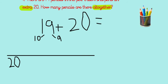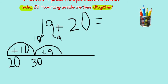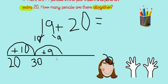Add on our 10s to start with. That's an easy one. 20 add 10 is 30. Well done. Then we're going to add on our ones. We've got 9 of those this time. 9 ones.